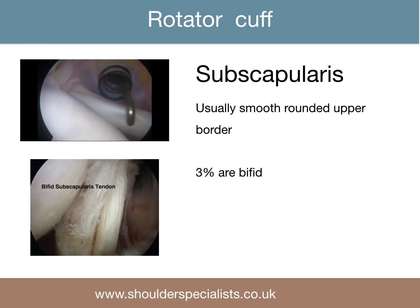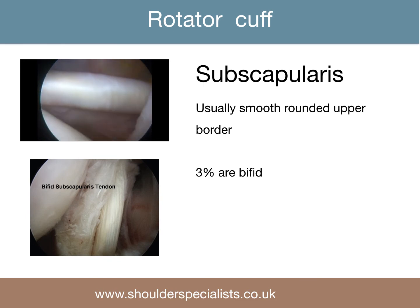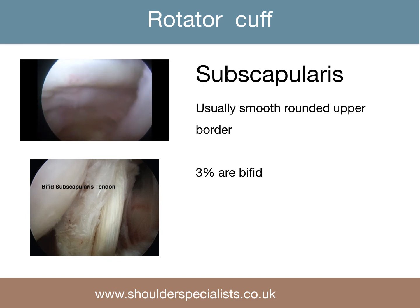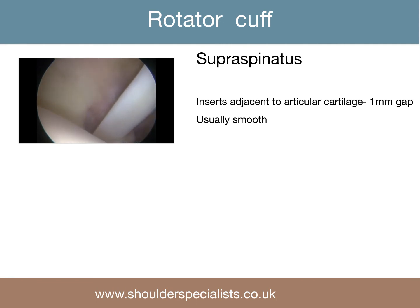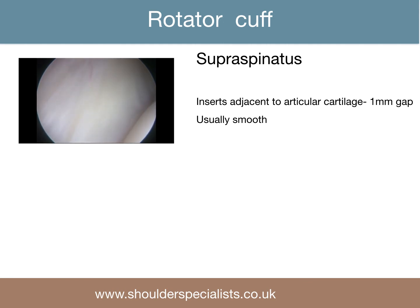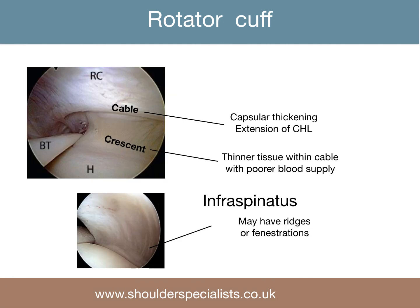The rotator cuff also demonstrates normal variation. The subscapularis tendon may be bifid in 3% of cases. The supraspinatus insertion is usually smooth, with up to a millimetre gap between it and the edge of the articular cartilage. The rotator cable is a capsular thickening and is an extension of the coracohumeral ligament. The crescent is the thinner cuff tissue contained within the boundaries of the cable, and is the part of the cuff with a poorer blood supply. Finally, the infraspinatus will often have fenestrations or ridges.